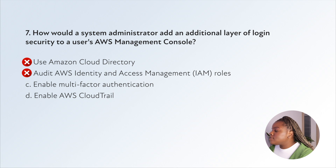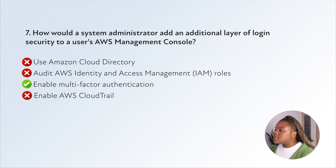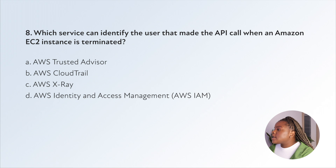Option C is to enable multi-factor authentication (MFA), which adds an extra layer of security by requiring users to provide unique authentication from an AWS-supported MFA mechanism in addition to their regular sign-in credentials when accessing AWS websites or services. Option D relates to CloudTrail, which records API calls — not an extra layer of login security. So option C, MFA, is the right answer.